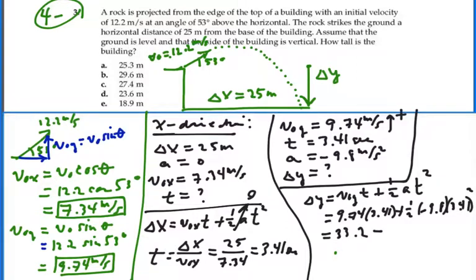And then we'll have minus 4.9 times 3.41 squared, which is 56.9. That gives me a negative 23.8.